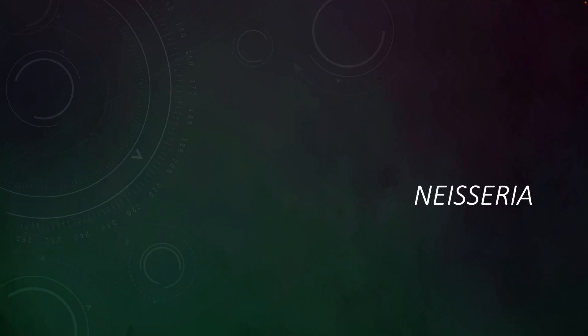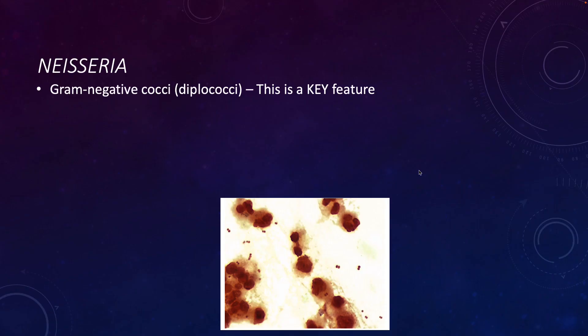The genus Neisseria causes two main infections in humans, and this genus is particularly interesting because it is a gram-negative coccus-shaped organism. This is the first gram-negative coccus we've talked about and is likely one of the only gram-negative cocci that you will see in a clinical setting. The fact that it's gram-negative and grows as a diplococcus is a really key feature for this bacterium.